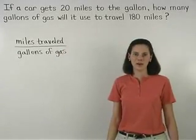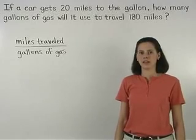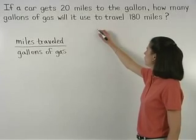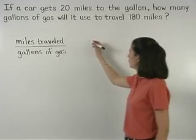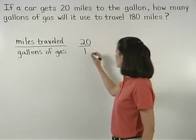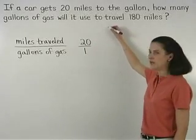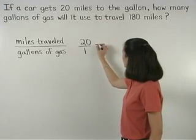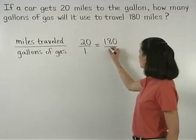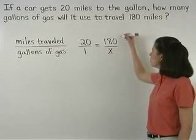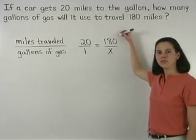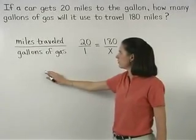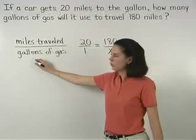Next, we set up a proportion based on the information in the problem. We know that a car gets 20 miles for every one gallon, so we have 20 over 1. And we're asked how many gallons of gas it will use to travel 180 miles, so that's 180 over x. Notice that the 180 miles must go on top in the second ratio because our unit ratio tells us that we put miles over gallons.